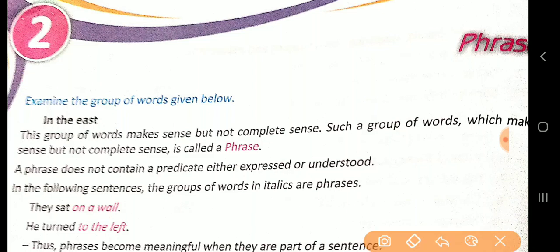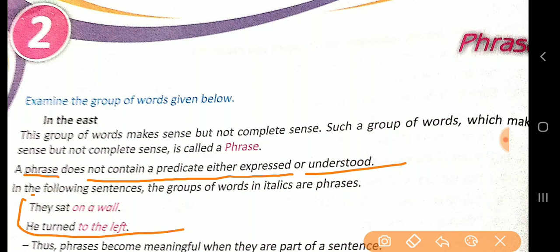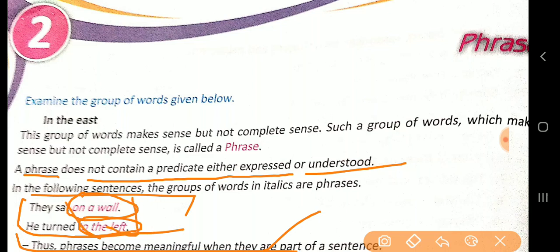A phrase does not contain a predicate, either expressed or understood. In the following sentences, the groups of words are phrases: 'on a wall,' 'to the left.' These phrases become meaningful only when they are part of a sentence. If only the phrase is given to you, it makes some sense but there is no complete sense. Phrases become meaningful only when they are added as part of a sentence.